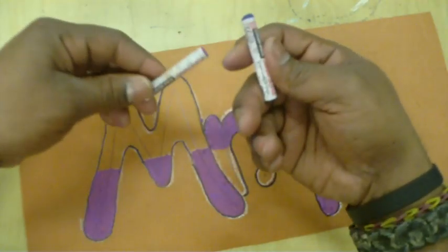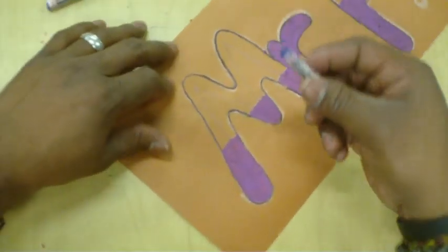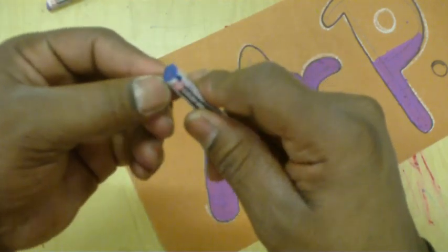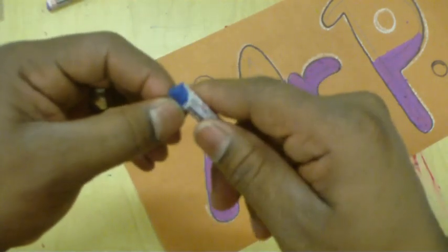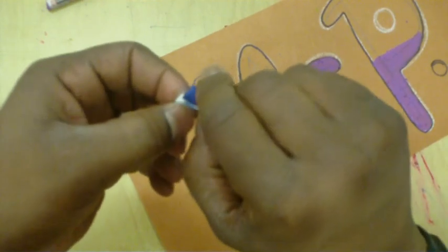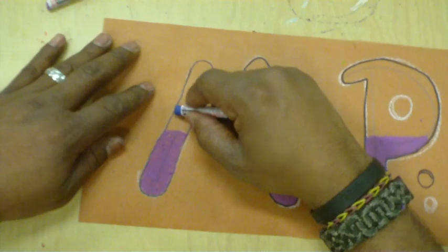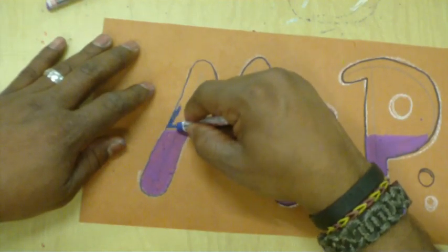All right, let's switch colors. Now, sometimes these things wear down a little bit, and if that happens, you can just peel the paper off. Sometimes they even break. So, you know, don't worry about it. You can still use it as long as you can get a grip on it with your fingers. No big deal.